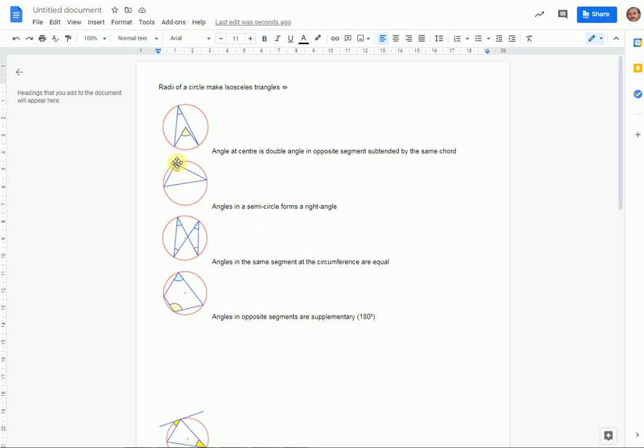The angle subtended by a chord across here. The angle on the circumference is half the angle at the center or the angle at the center is double the angle on the circumference. Angles in a semicircle from a right angle. So there's a diameter going through the middle. You should look for a dot in the middle to show it's going through the center. But this creates a 90 degree angle.